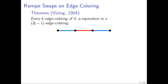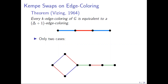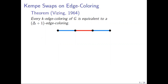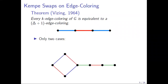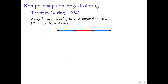For edge coloring, Kempe swaps are much more tractable than in the vertex coloring case because Kempe chains have a very constrained structure. A Kempe chain is a maximal bichromatic component: given a coloring and two colors, say red and blue, you consider an edge colored red or blue and look at the maximal component containing that edge. For edge coloring, because each vertex can only have one red and one blue incident edge, a Kempe chain is either an even cycle or a path.